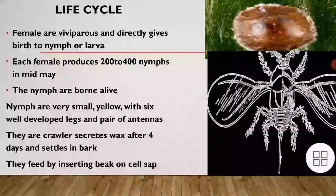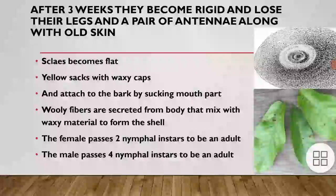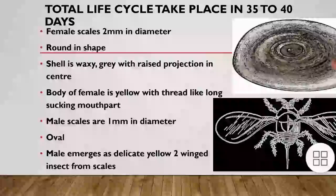They feed by inserting their beak to suck cell sap. After three weeks, they become rigid and lose their legs and antennae along with the old skin. Scales become flat. Yellow sacs with waxy caps are seen attached to the bark using sucking mouthparts. Woolly fibers are secreted from the body and mix with waxy material to form the shell. The female passes two nymphal instars to become an adult, whereas the male passes four nymphal instars to become an adult. The total life cycle takes 35 to 40 days.